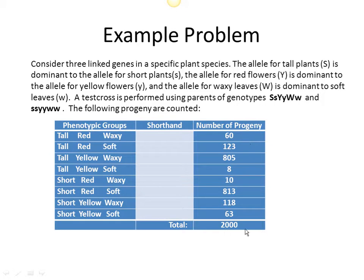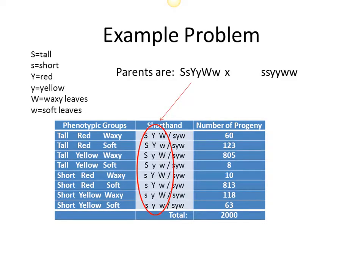Some offspring have different combinations of these traits — for example, 60 offspring are tall, have red flowers, and waxy leaves, and so on. I made the total number come out to an even 2,000; in real data it would not be a nice round number. You'll be presented with phenotypic groups showing trait combinations in your offspring and how many offspring had each exact combination of traits.